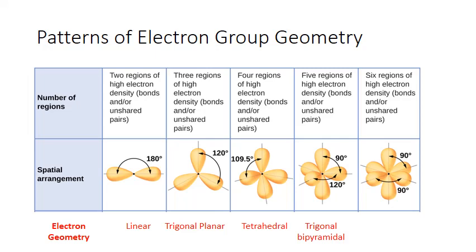You have what we call an equatorial plane that runs horizontally with three groups in that plane — you can imagine this extending into and out of the screen — and those three groups arrange themselves so that they are 120 degrees apart. In the axial plane, which is vertically extended, you have two groups that are 90 degrees away from the groups in the equatorial plane. So you have two bond angles: 90 degrees for the axial and 120 for the equatorial.